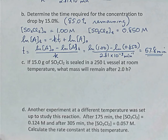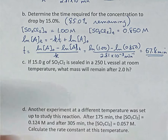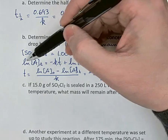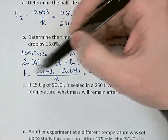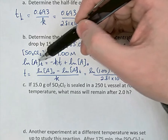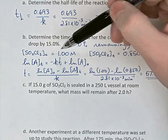Part c: If 15 grams of SO₂Cl₂ is in a sealed 250-liter vessel at room temperature, what mass remains after two hours? You could convert grams to moles, divide by volume to get molarity, calculate the concentration remaining, and convert back to grams. However, in first-order kinetics, natural logs create a unitless quantity, so you can use any quantity proportional to concentration.